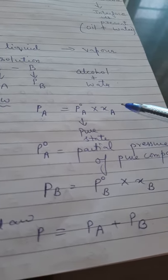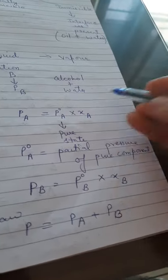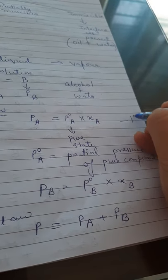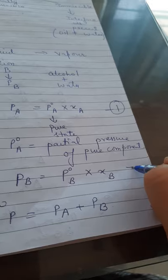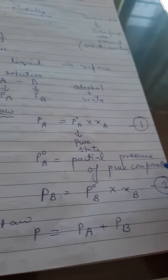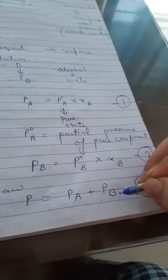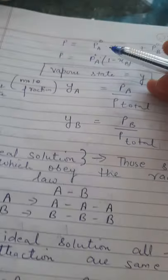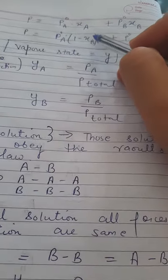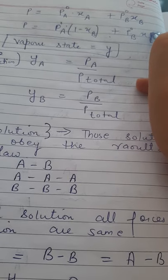Now we will put the values of equation number 1. We will give this number 1, and this equation number 2. We will put both these equations in equation number 3. Now equations 1 and 2 we will put in 3. So P is equal to P0A into XA plus P0B into XB.